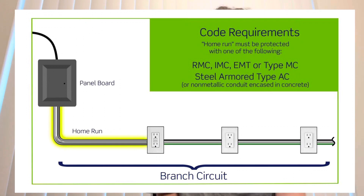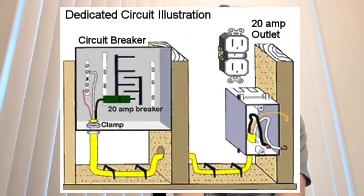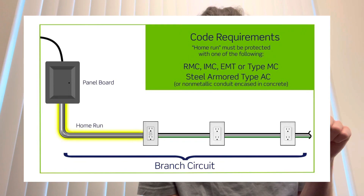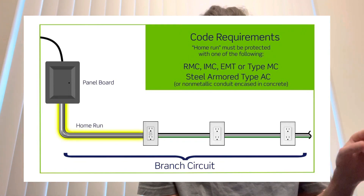Then you've got your home run, which is the beginning of a circuit back to the breaker in the panel box. That can be either an individual dedicated circuit — like your refrigerator or microwave — where it's just one wire going all the way back to the panel with nothing else on that circuit. Or in a kitchen you can have one home run that starts a circuit with multiple receptacles tied to it — three, four, five plugs on one home run.